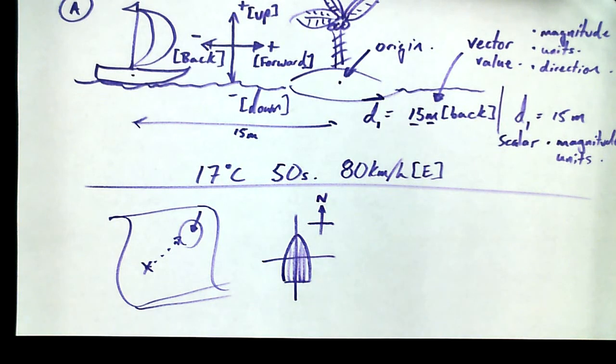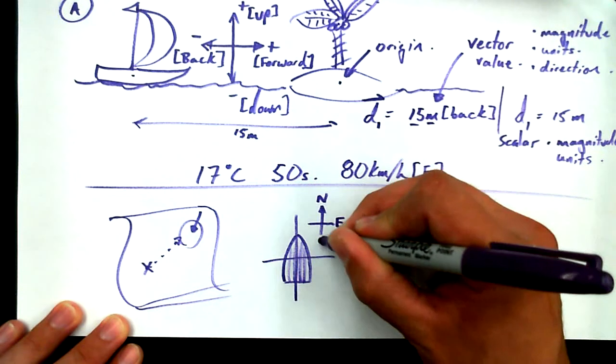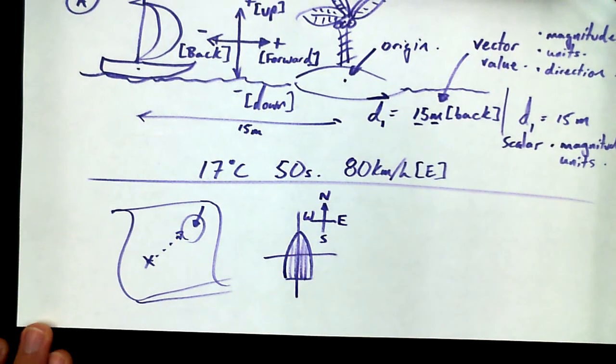And you probably have a memory aid of your own from elementary school. Mine was never eat shredded wheat. I hear people say never eat slimy worms. Whatever it is. North, east, south, west. Goes around the compass clockwise. Does anybody have anything other than never eat shredded wheat or never eat slimy worms? Never eat Santa's wife? Never eat Santa's wife? That's gruesome.